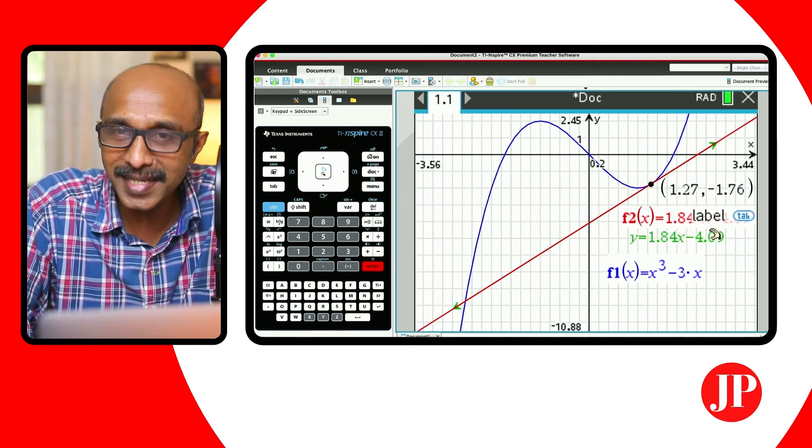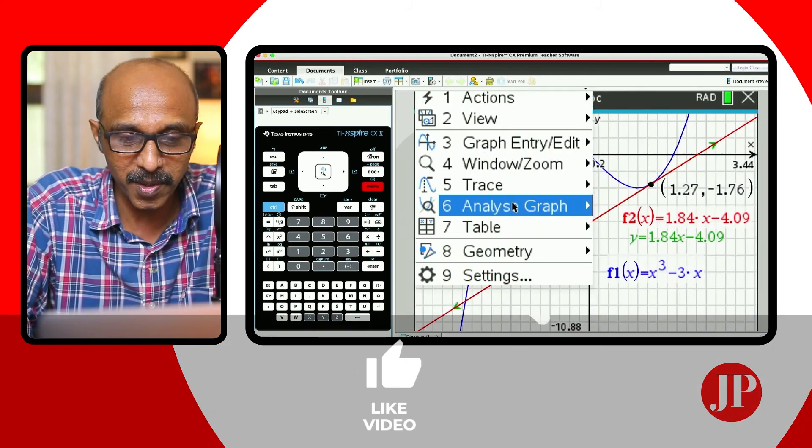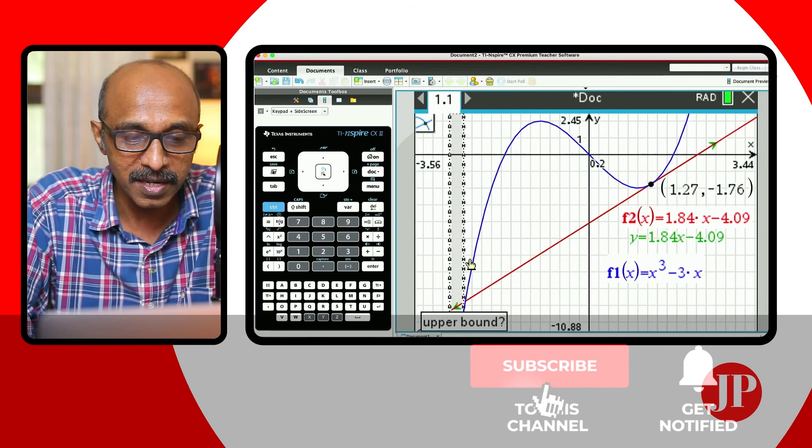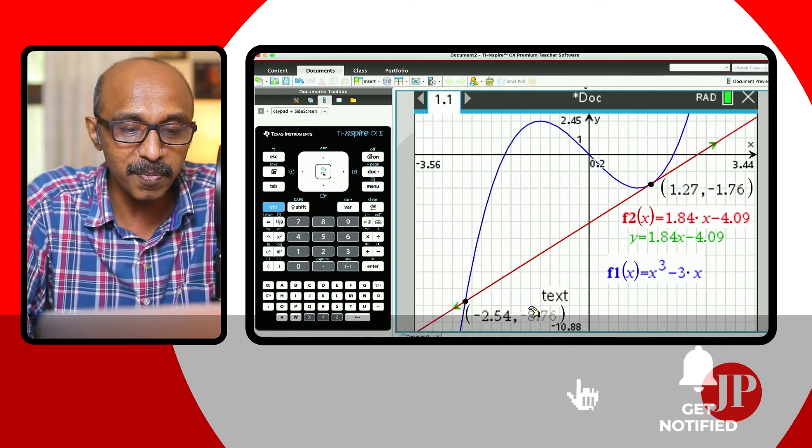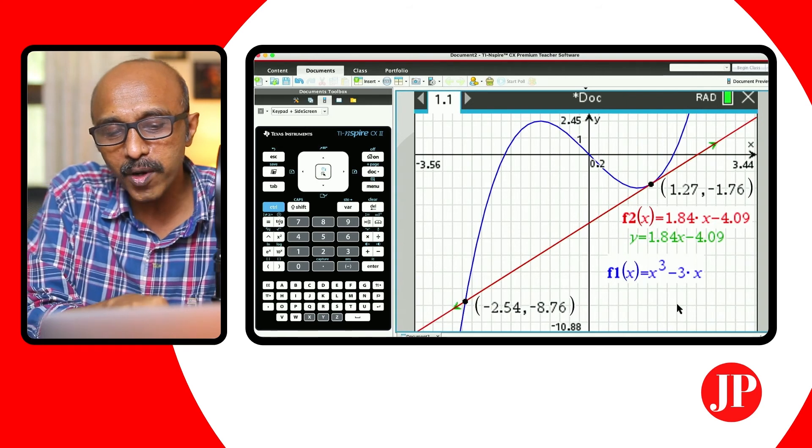So now this red graph, which is the same as the tangent line, we can find the point of intersection just by going analyze graph of any of the techniques that you knew before. So I can just go on lower bound, upper bound, and it gives me the point of intersection. So this is a workaround technique of how to find the coordinates of the point of intersection where the tangent will meet the curve again.